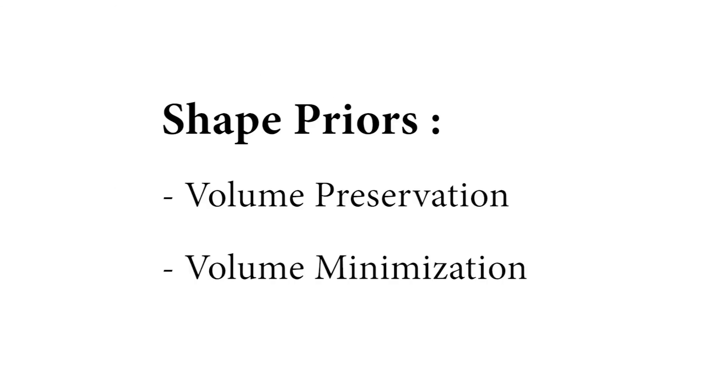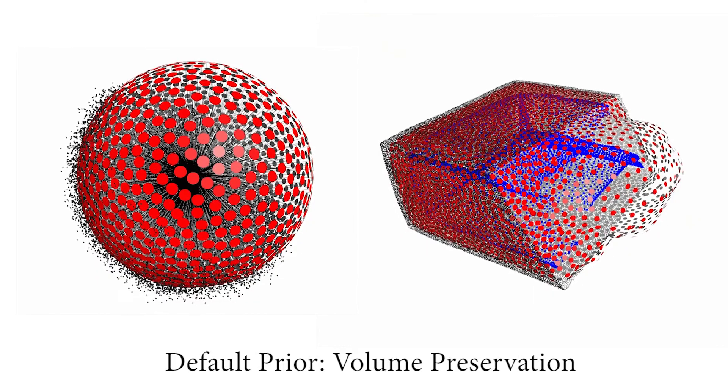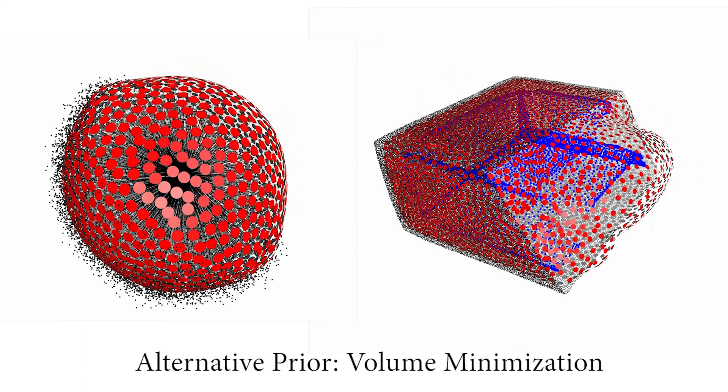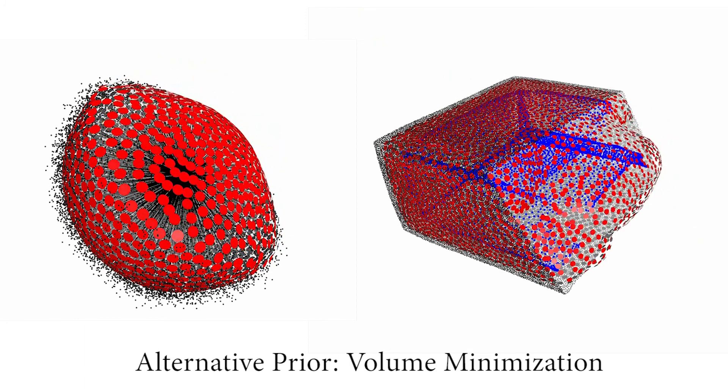Deep points allow us to easily include different shape priors. Here the default prior preserves local volume in the completed region. As an alternative, we also provide a prior that minimizes the volume of the missing area.